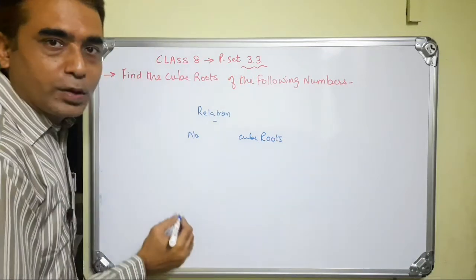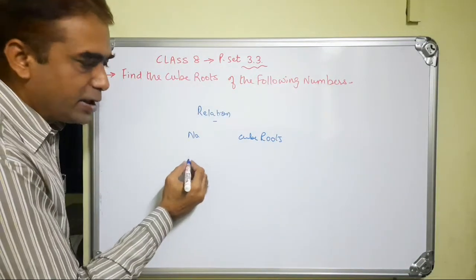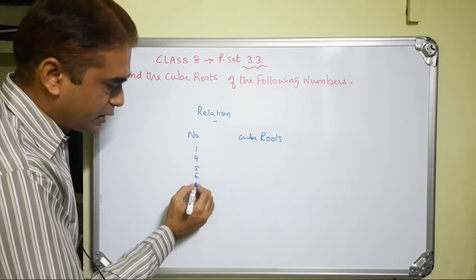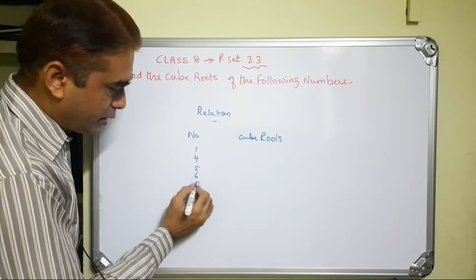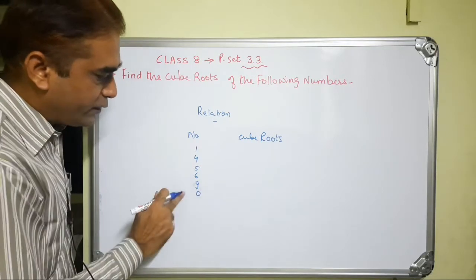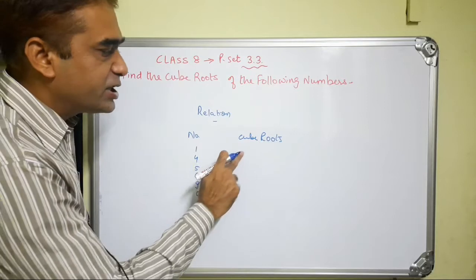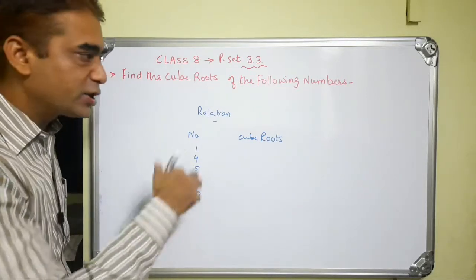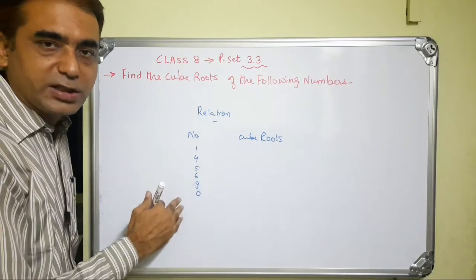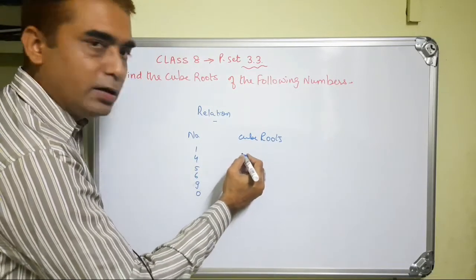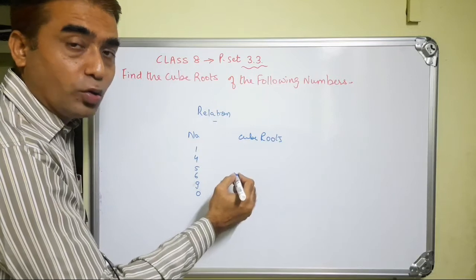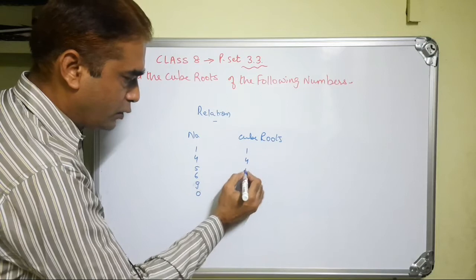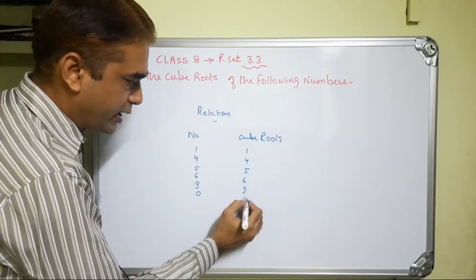We studied that if the digits at the unit place of a number are 1, 4, 5, 6, 9, or 0, then the digits in the cube roots of these numbers will be the same. That means at the unit place of the cube root, the digit will also be 1, 4, 5, 6, 9, or 0.